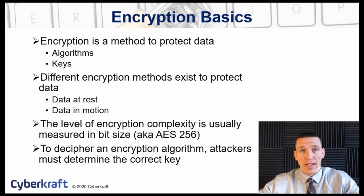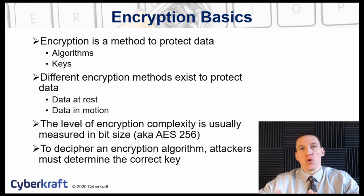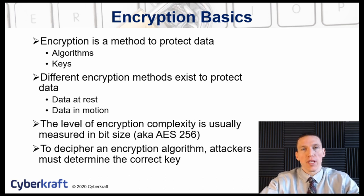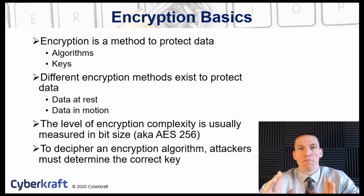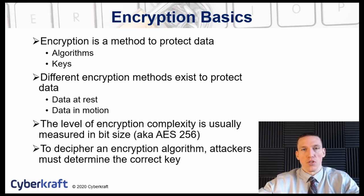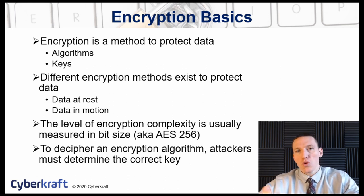Encryption is a method of protecting data. It uses algorithms to scramble data into an unreadable format. Encryption keys are used to encrypt and decrypt data by applying a certain algorithm. Data at rest and data in motion have different methods of encryption. The level of encryption complexity is usually measured in the number of bits.